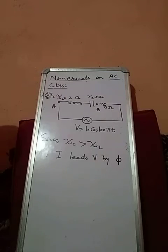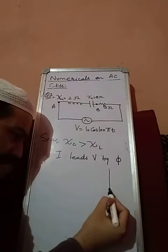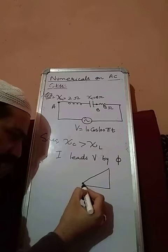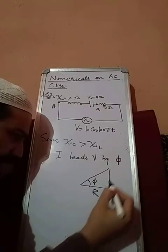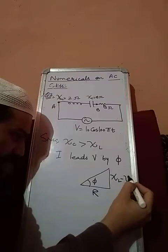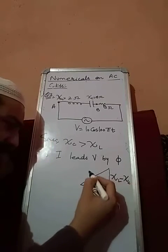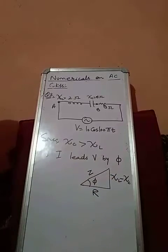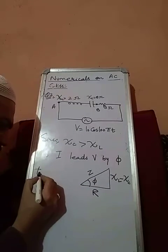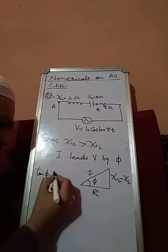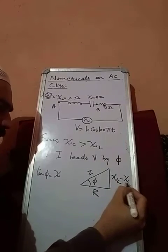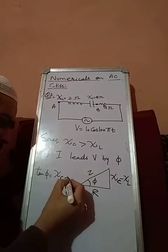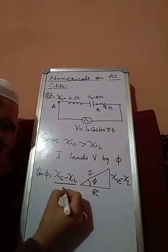Now the problem is how phi will be calculated. Again we will go to the impedance triangle. In LCR circuit this is base, its perpendicular is chi L minus chi C, and this is Z. So tan phi will come, but we will write chi C minus chi L by R.